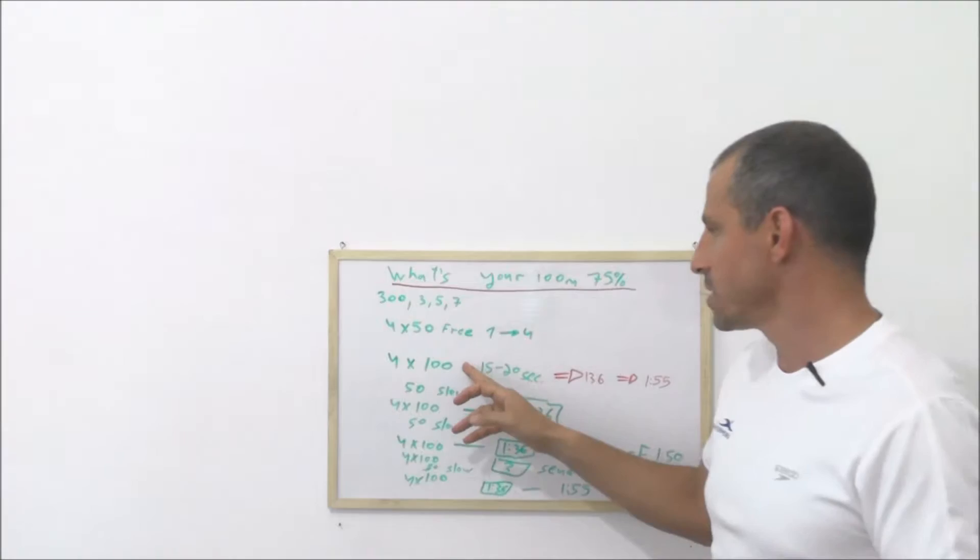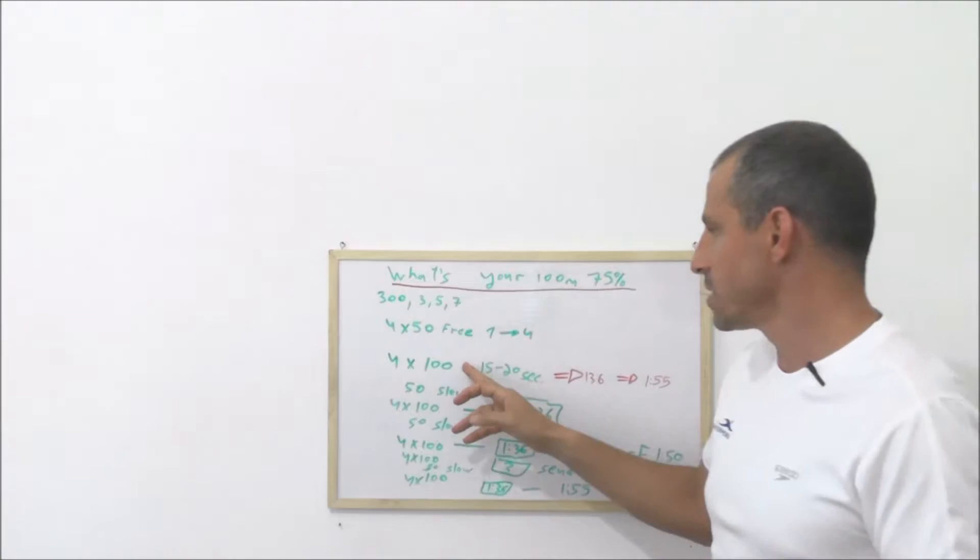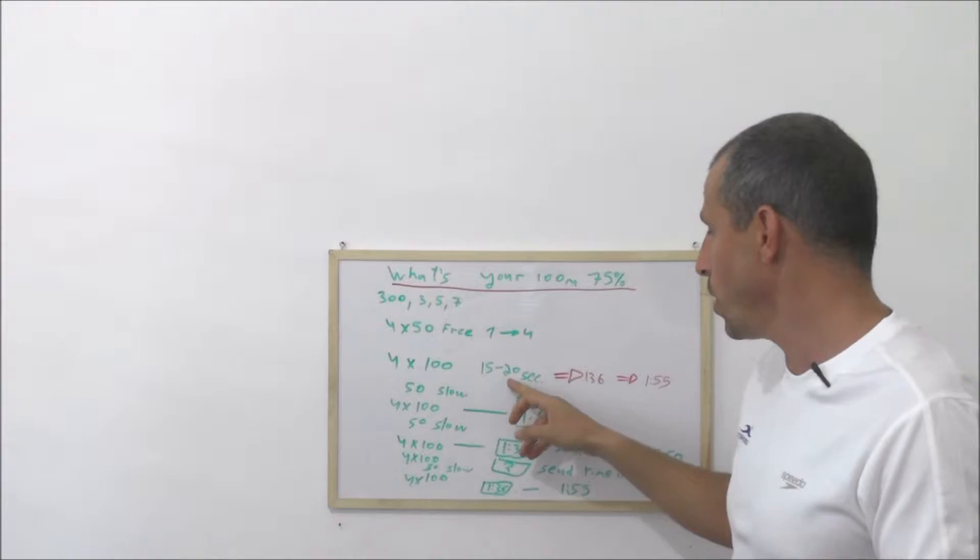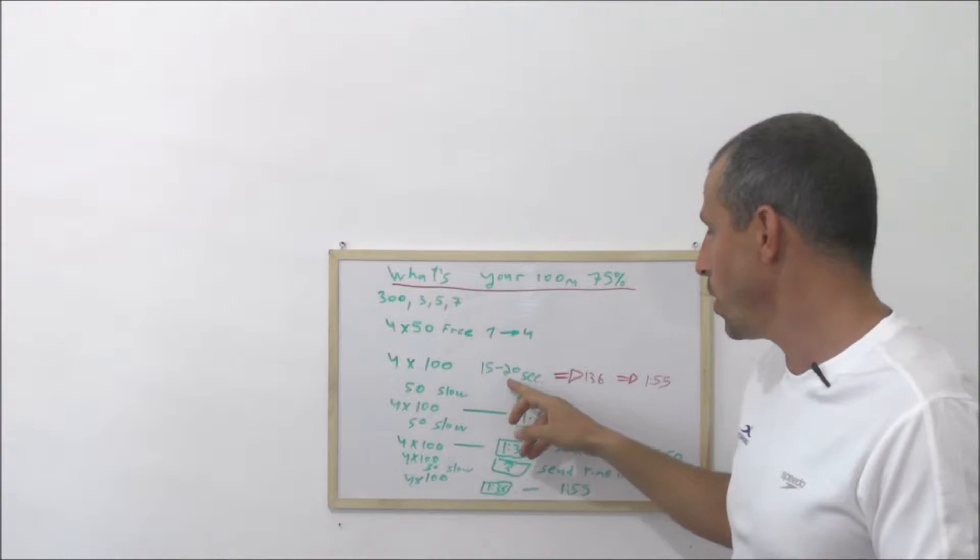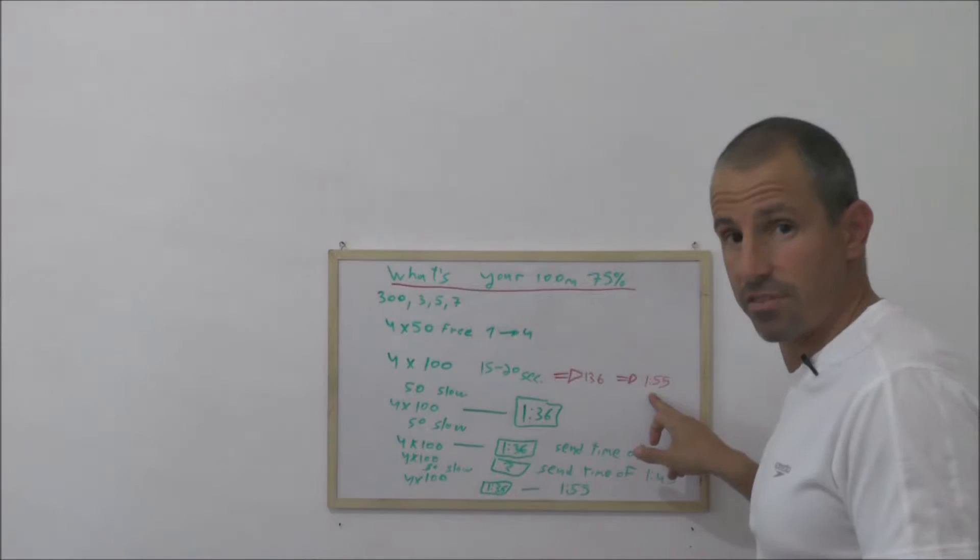And now we're gonna start. First exercise is to control the 100. You're gonna do four times 100 with a send-off time of 15 to 20 seconds rest. If your average pace in 100 is 1:36, your send-off time is gonna be 1:55.